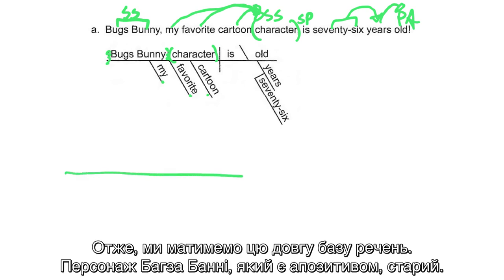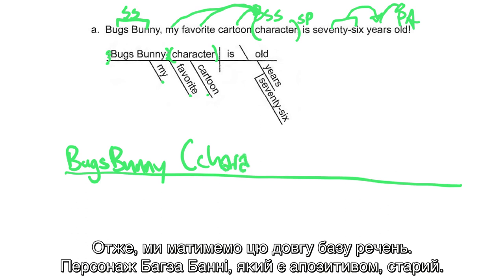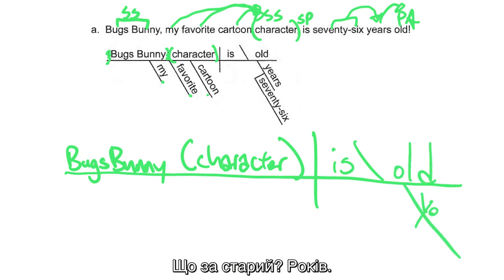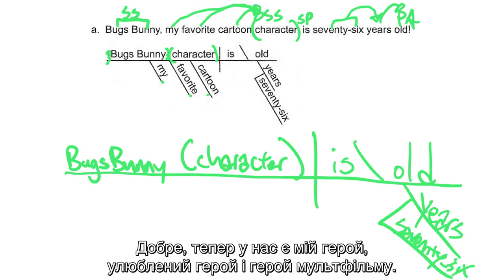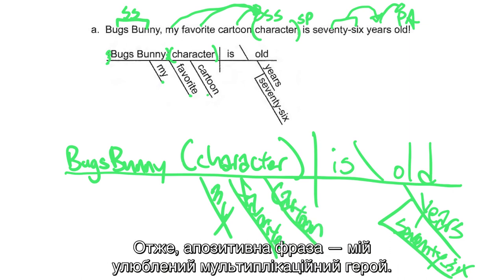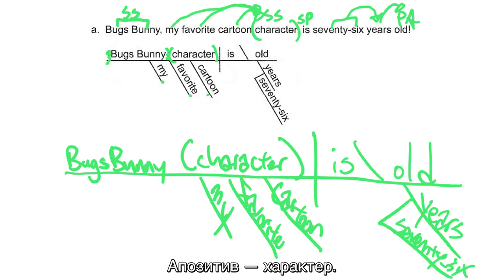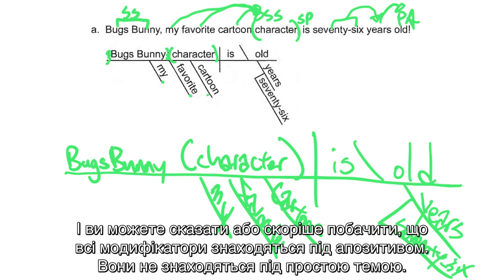So we're going to have this long sentence base: Bugs Bunny, with character as the appositive. What kind of old? Years old. How many years? 76. Now we have my character, favorite character, and cartoon character. So the appositive phrase is 'my favorite cartoon character.' The appositive is 'character,' and you can see that all of the modifiers are underneath the appositive — they're not underneath the simple subject.